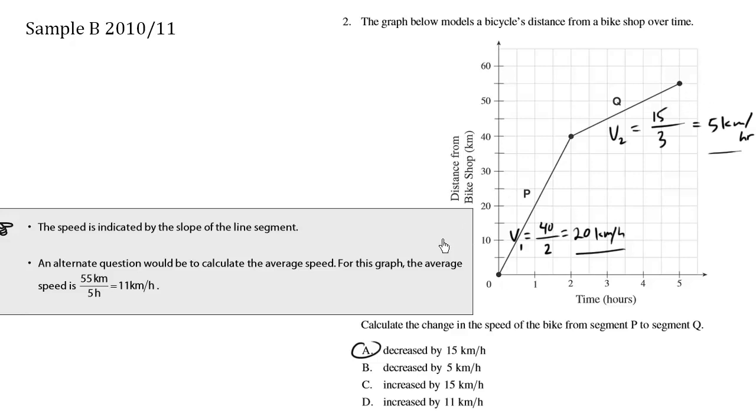The average speed would be the rise, which is 55 minus 0, so 55 kilometers, over the overall change in time, which is 5 hours. The average speed would be 11 kilometers per hour. But that's not the question.